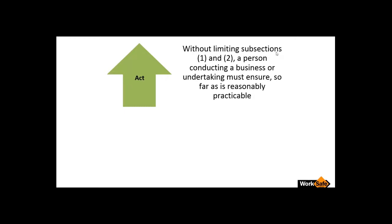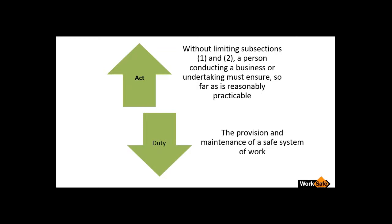So with the Act, it actually says — without limiting subsections 1 and 2 — a person conducting a business or undertaking must ensure, so far as reasonably practicable. Those subsections basically mean that you need to ensure that people who are involved in your workplace are able to work safely, or that the health and safety of those you employ is protected. And whatever you carry out doesn't affect the health and safety of other people. But further down in the Act, it discusses some other duties, one of which is the provision and maintenance of a safe system of work. A safe system of work can mean a Workplace Health and Safety Management System — the format most people use today to manage their workplace health and safety.